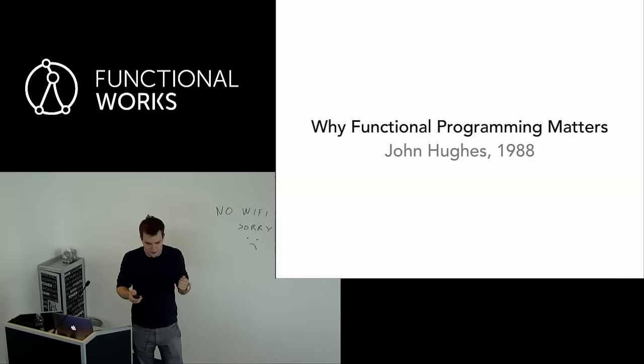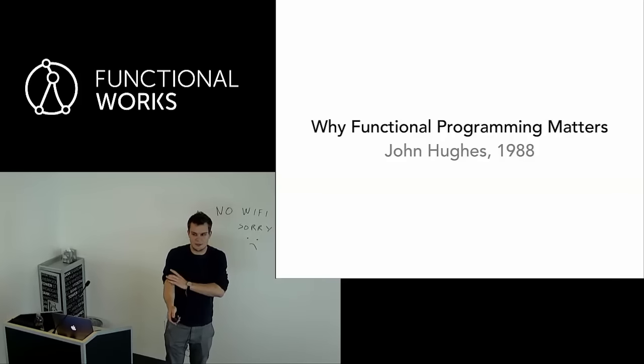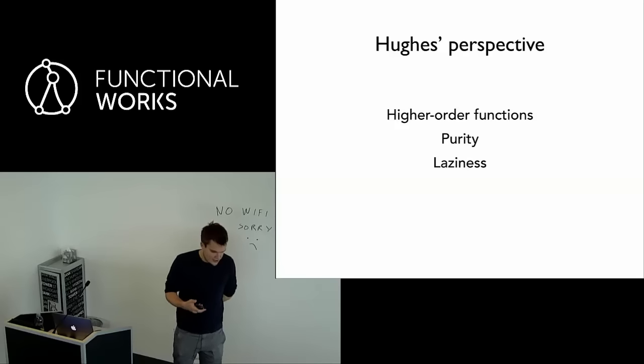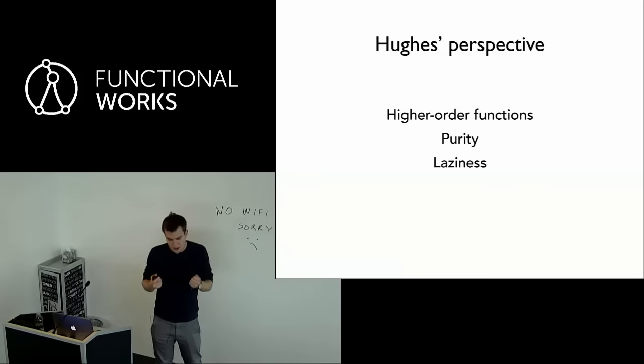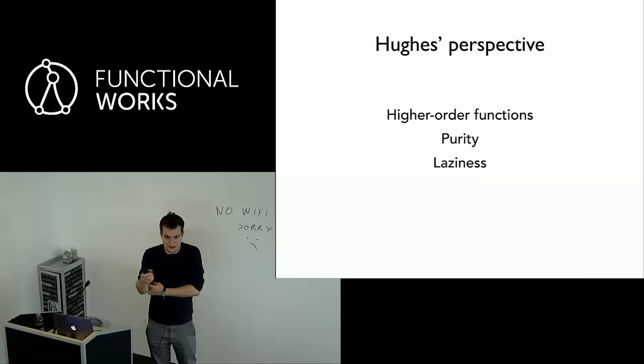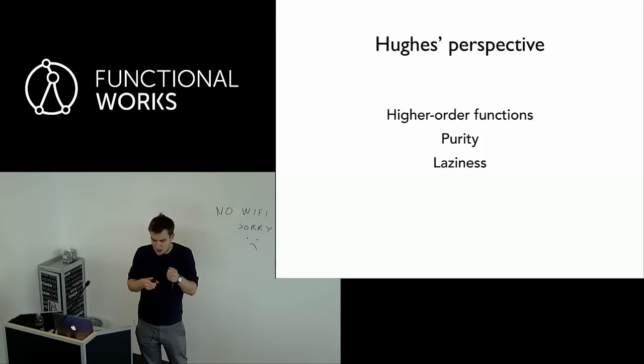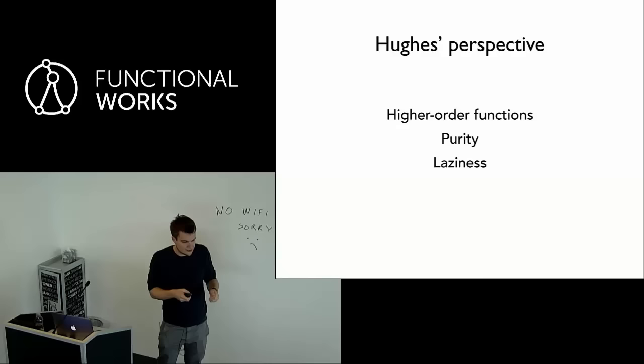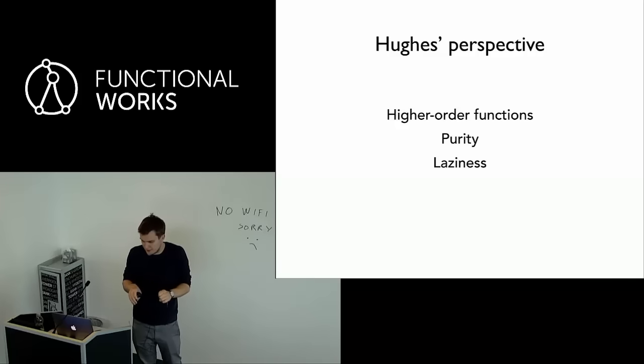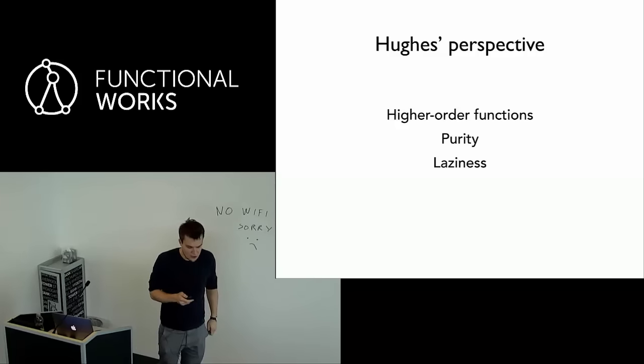So let's start with a quick tour of what his argument is, what John Hughes thinks functional programming is about. So he describes three characteristic features of functional programming language that he thinks are key to their success. Those are higher-order functions, purity, and finally laziness. So in a general point of view, as software developers, software engineers, our job is to manage complexity, and we do that by modularizing various bits of code, separating concerns, and composing things into different modules. And Hughes in his paper describes these three features as sort of the glue to make that possible, to be able to separate concerns.